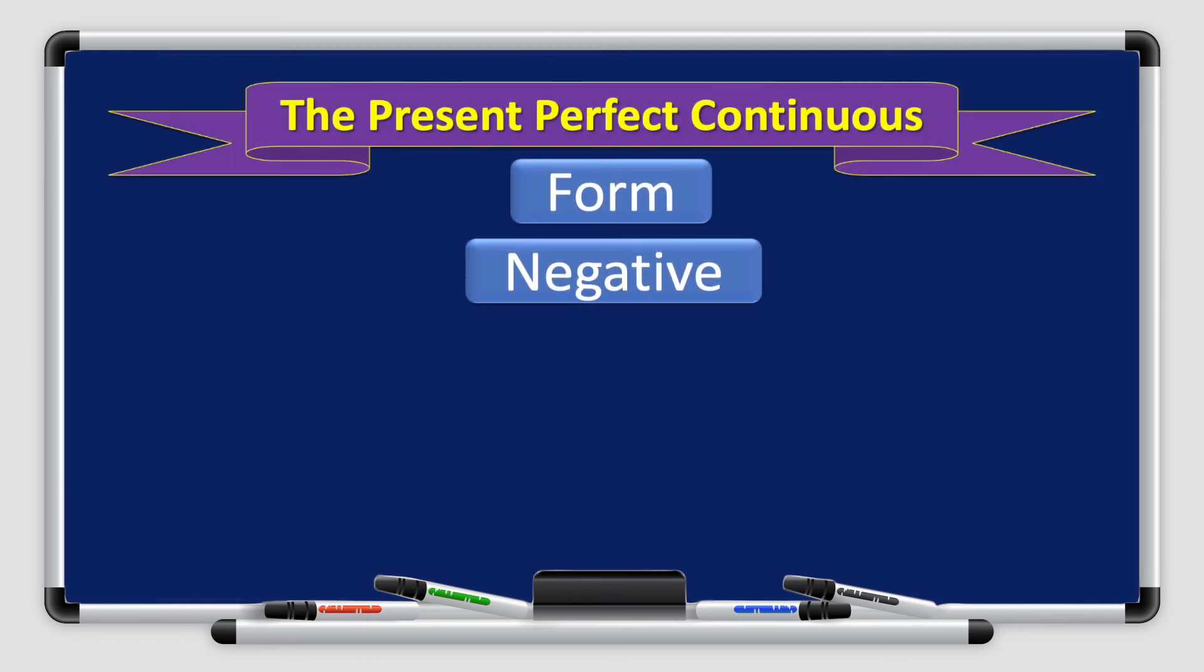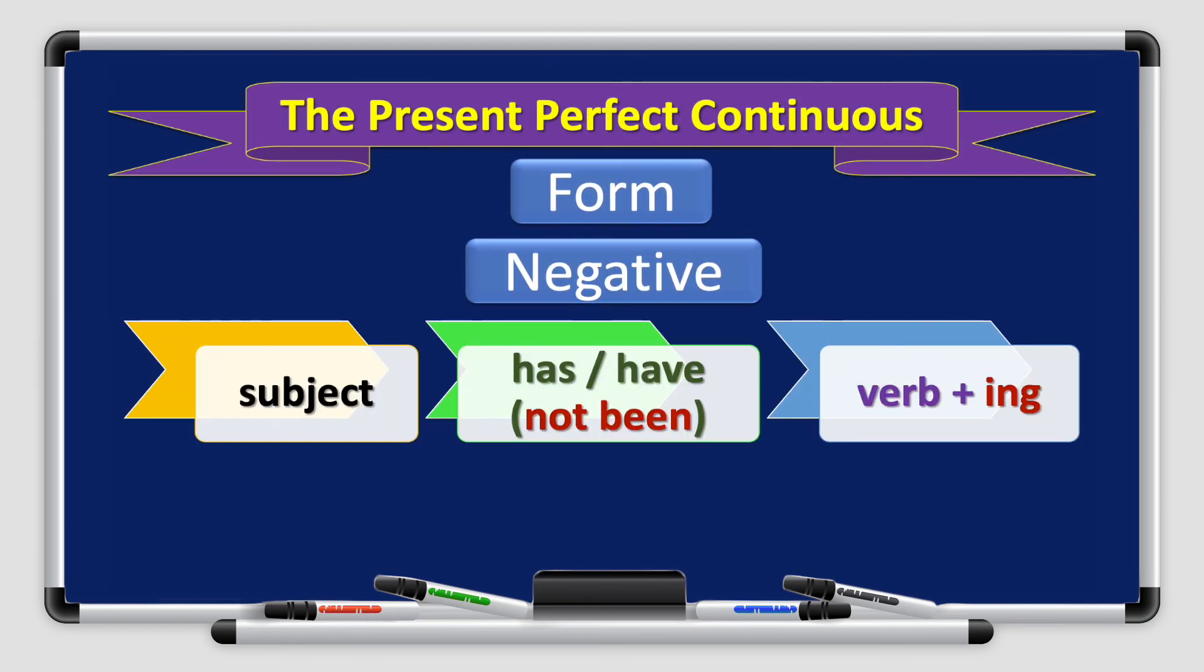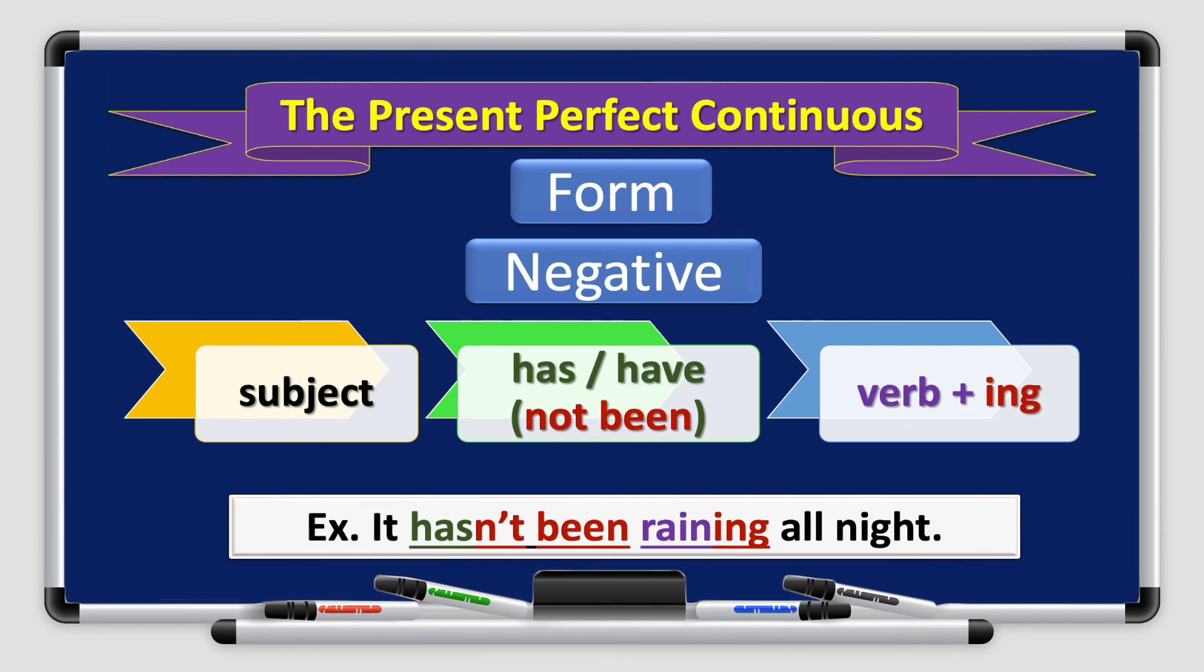What if I want to form a negative sentence? I start with the subject. Again, has or have, followed by not been. I add not and been, followed by verb ing. For example, it hasn't, has not, it hasn't been raining all night.